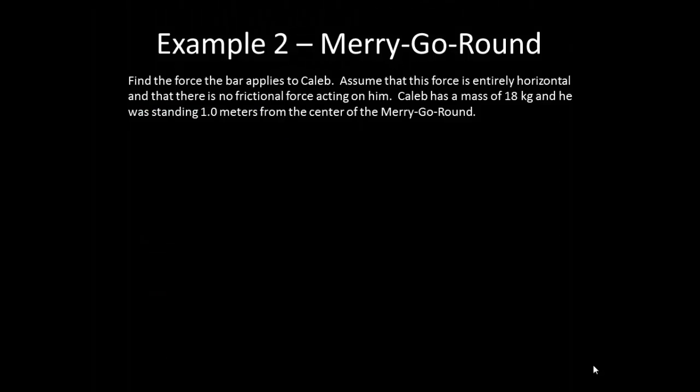All right, so now that we've thought about the force acting on Caleb, let's find the actual force of the bar that is applied to Caleb. Assume that this force is entirely horizontal and that there is no frictional force acting on him. Caleb has a mass of 18 kilograms and he was standing 1.0 meters from the center of the merry-go-round. At this point, I would like you to pause the video and try to solve this problem. Note that you will have to go back and get information from the video. What would be appropriate to find from the video? After you are done trying to solve this problem, you can go ahead and unpause the video and finish watching for a solution.